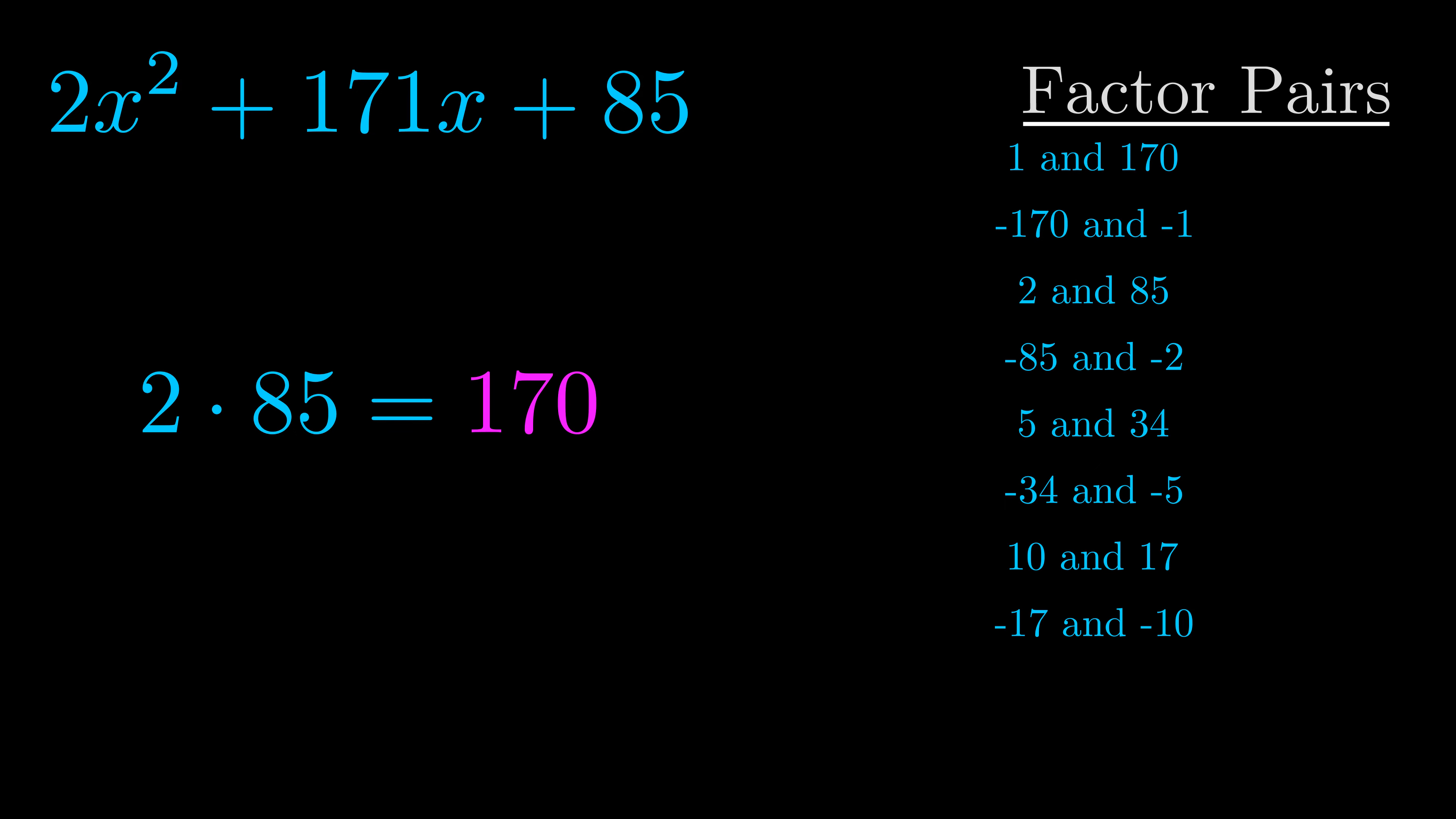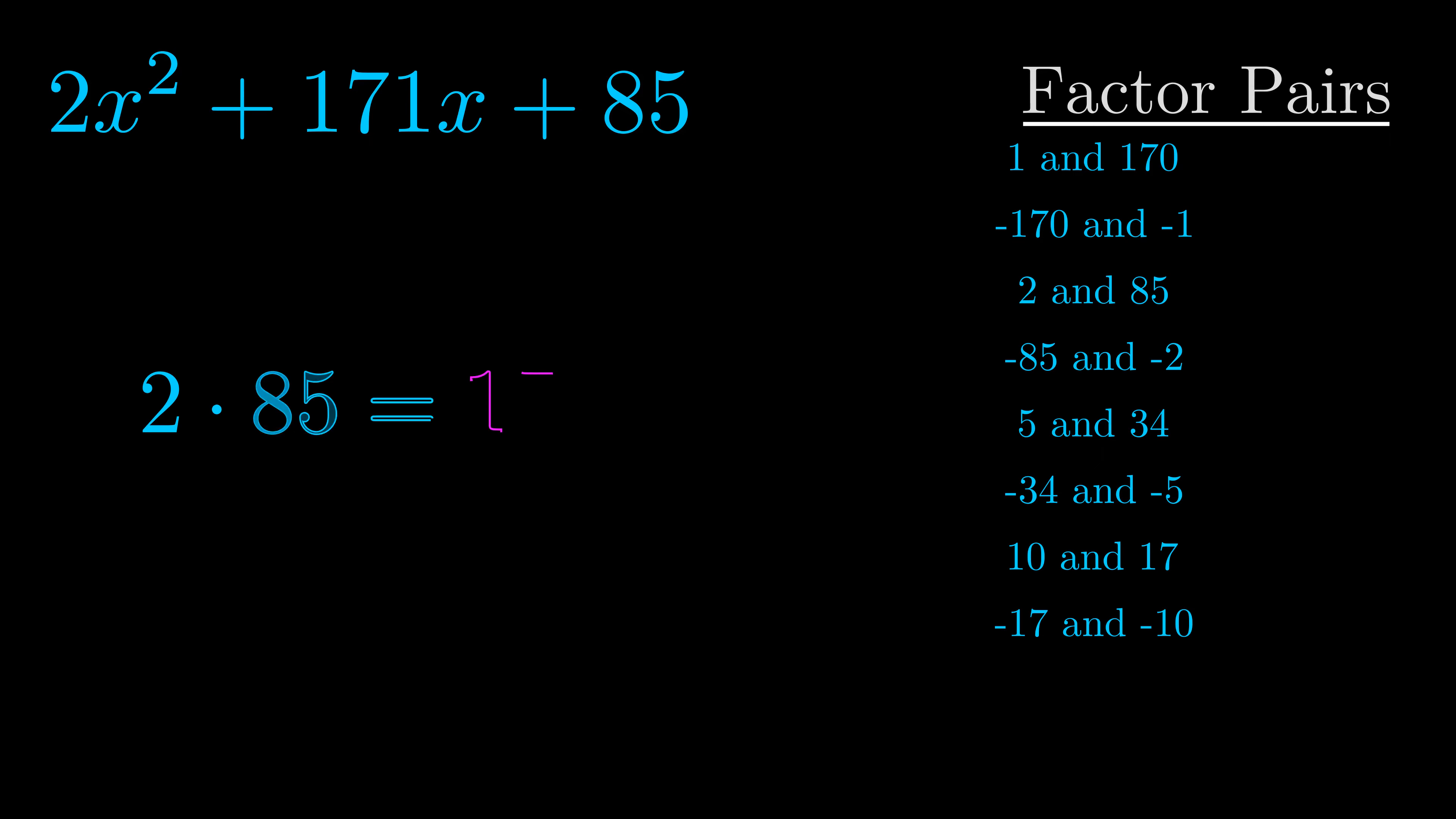Now once you have these factor pairs the goal is to find which of these pairs adds to the b value. The b value is the coefficient on the x term. That's the middle term, the one that we haven't done anything with yet. And really this is the only factor pair that we need.